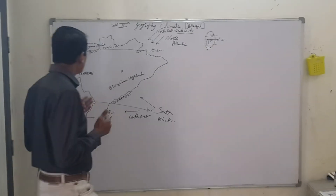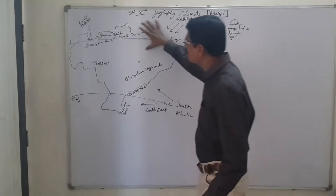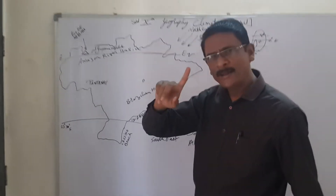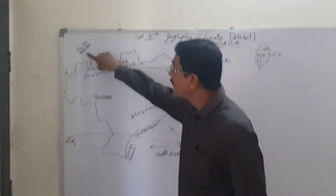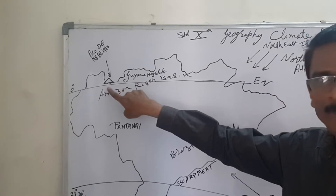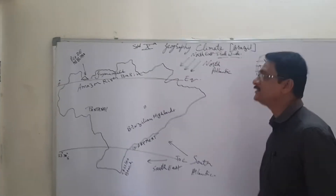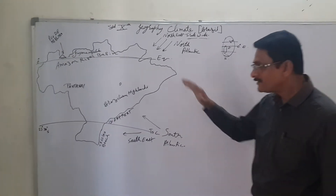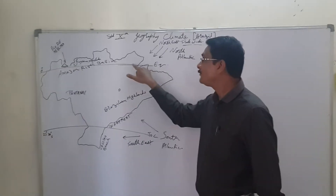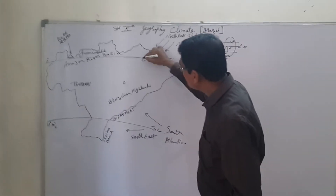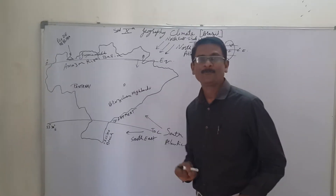We also have to understand the importance of the Brazilian river basin, which encompasses most of the area of Brazil. Keep in mind, there are also the Guyana Highlands, of which Pico da Neblina is the highest peak. Because of the elevation, the area that receives rain from these directions flows accordingly. From 5 degrees to the north and 5 degrees to the south of the equator is the equatorial zone.